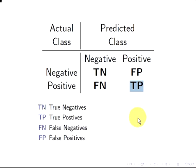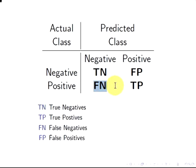The overall proportions of particular results are usually of interest. For example, predicted positive results are the false positives and true positives collectively. Whereas the actual positive outcomes are the false negatives and true positives — an important point for later on.